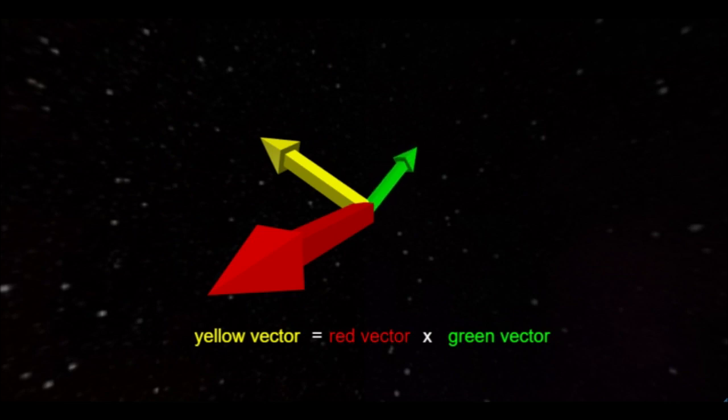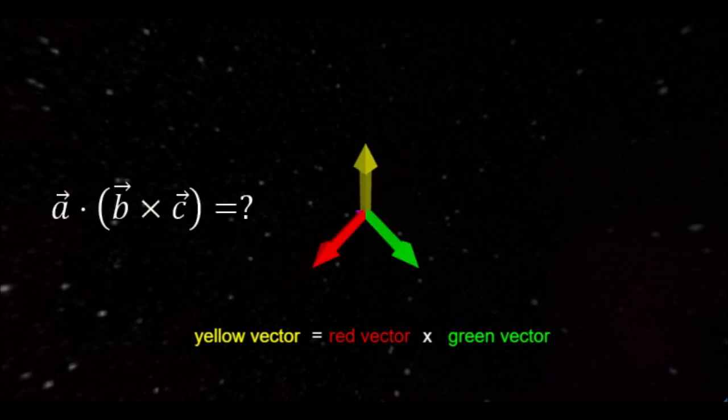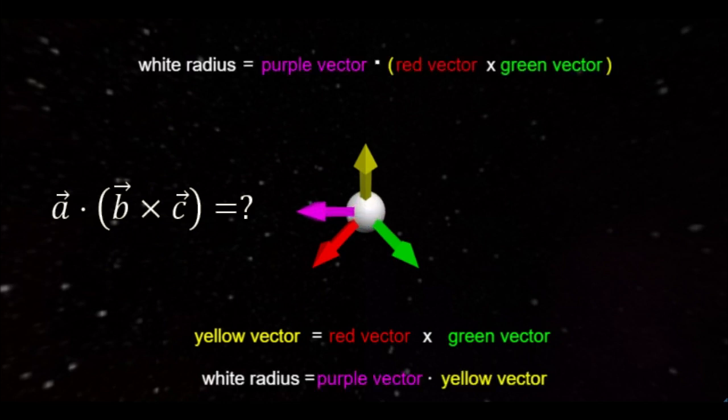Fortunately, the universe does not give us problems like this, so you only ever have to take vector multiplication one way. But sometimes you have to apply those products multiple times. Take, for example, dotting a vector with a cross product of two other vectors.